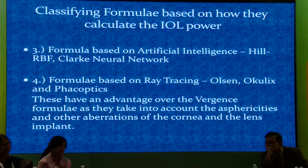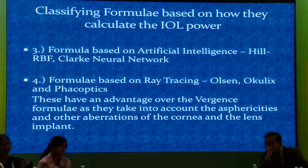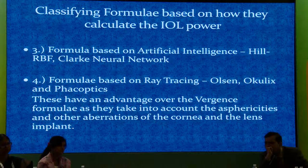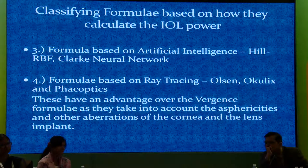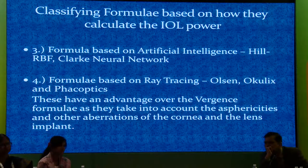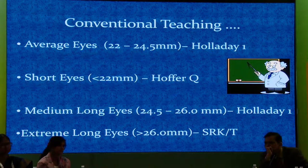The Hill RBF is like artificial intelligence — we all feed data in, it goes to their servers, they calculate and send it back, collecting data from millions of eyes worldwide. The next future, I feel, will be ray tracing — the Olsen formula — which will account for all the different asphericities of the cornea as well as the lens being implanted.